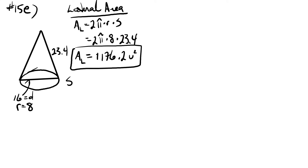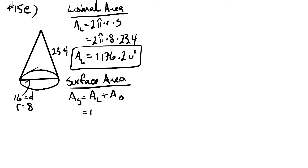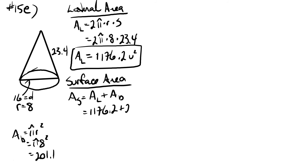Once we have the lateral area, we can find the surface area. Surface area equals the lateral area plus the area of the base — since there's no top. The area of the base is pi times eight squared, which is sixty four pi, giving us two hundred and one point one. So the surface area is one thousand one hundred and seventy six point two plus two hundred and one point one, which equals one thousand three hundred and seventy seven point three units squared.